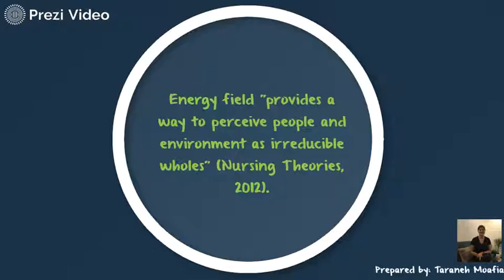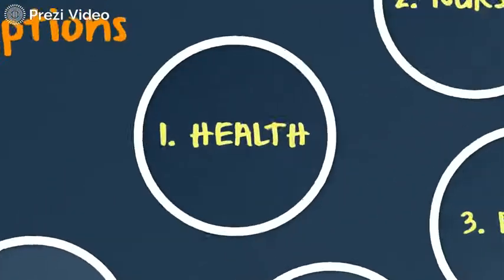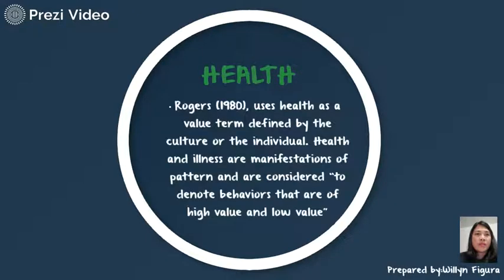Let us now discuss the fundamental ideas about the theory, or the four major assumptions. First is health. According to Rogers, she uses the term passive health to symbolize wellness and the absence of disease and major illness. She uses health as a value term defined by the culture or the individual. Health and illness are manifestations of pattern and are considered to denote behaviors that are high-value and low-value.